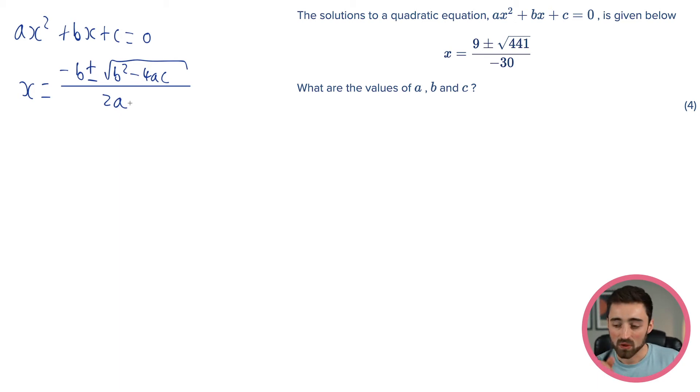Look at this. We've already got the answers here. We have x = (9 ± √441) / (-30). Hmm. Can we see any relationship with these two things? We've got a quadratic equation. We got these as our answers. But wait a minute. This just exactly corresponds to the quadratic formula, doesn't it? Because look, we've got a number out front, which would be our -b.